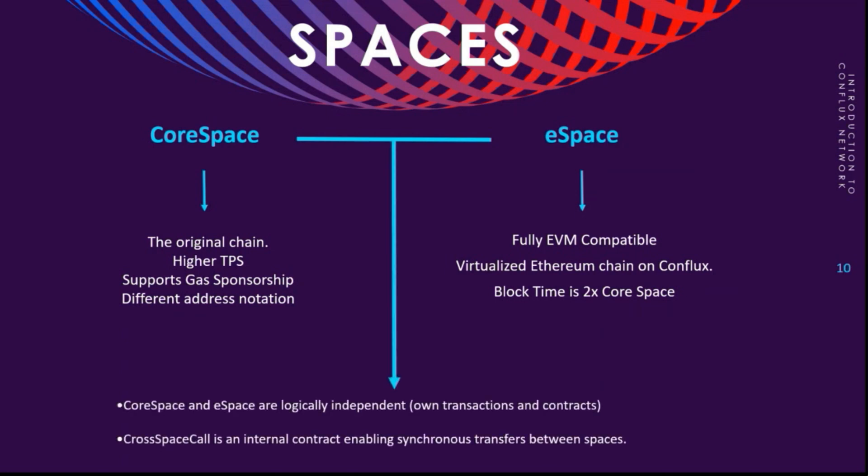Both of these are logically independent. They have their own transactions, their own contracts, their own addresses. But there is a link between them which is mostly based on this CrossSpace Call internal contract that enables communication between these spaces. This means that you can, for example, deploy a contract on eSpace from Core Space, or transfer CFX from Core Space to eSpace, or call methods from a contract on eSpace from Core Space. It's a key element in this Spaces innovation.